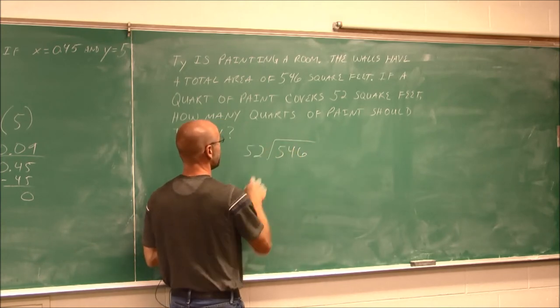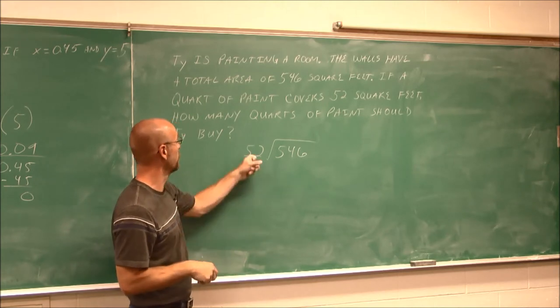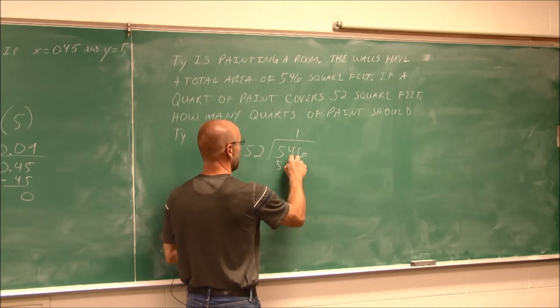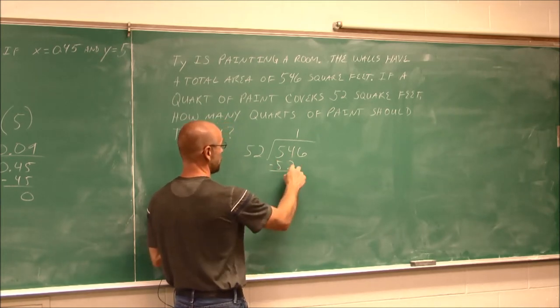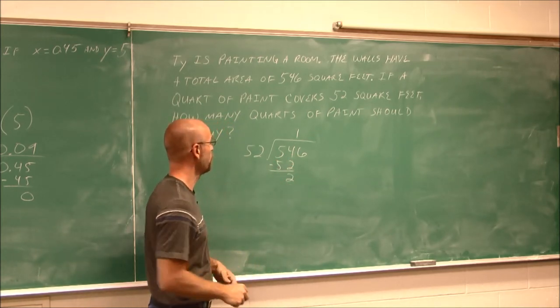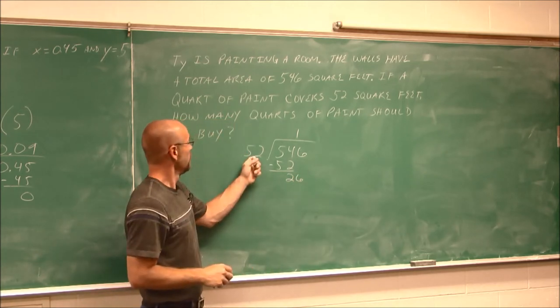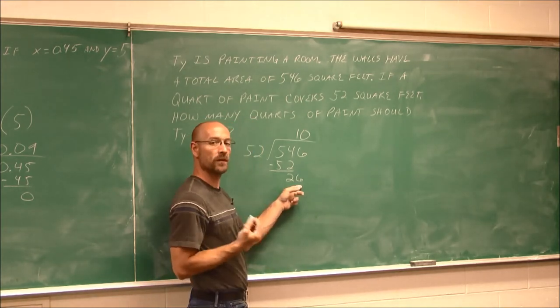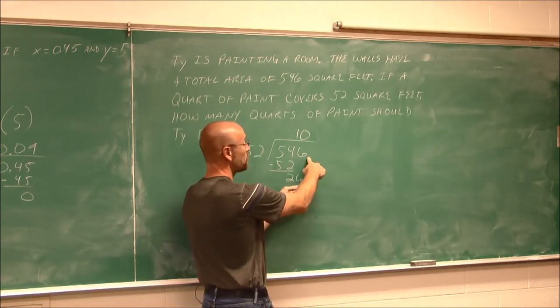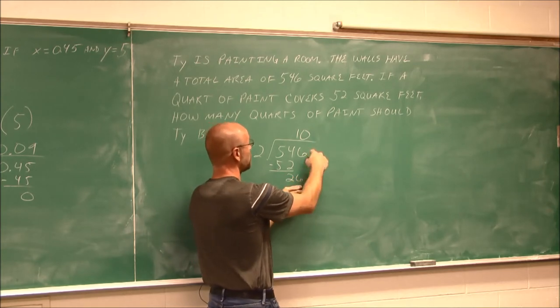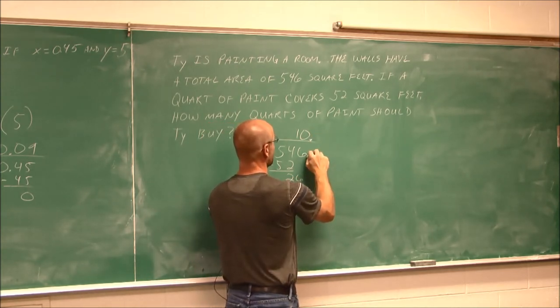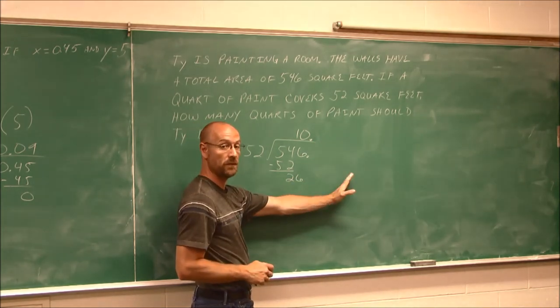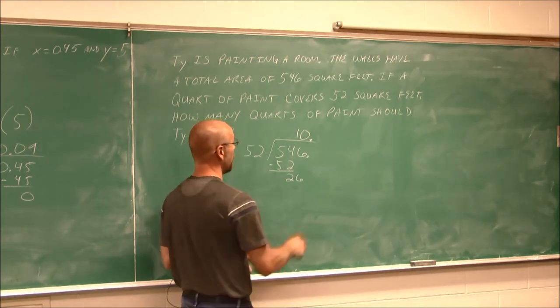546 divided by 52. Now there's no decimal, so I'm not going to worry about it. But 52 goes into 54 one time, and I find that difference to be 2. Bring down the next value. 52 doesn't go into 26. So what do I do at this point? Well, here we have to imagine there is a decimal there. Just because I didn't write it, now I have to introduce that decimal, because I need more values to bring down if I'm going to continue the division. We're not going to leave it as a remainder.